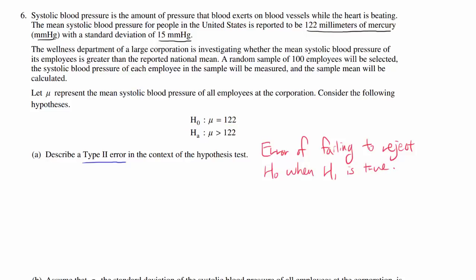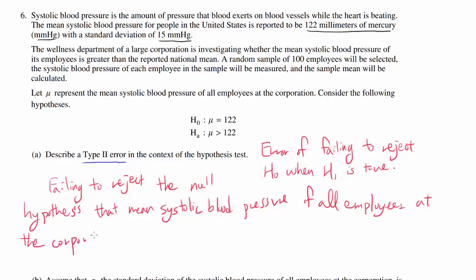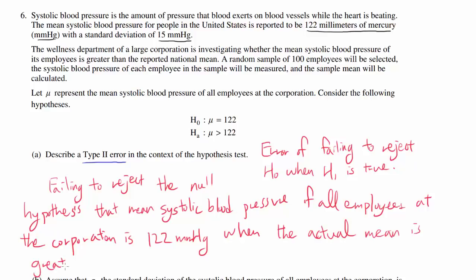So even though the alternative hypothesis is true, you're failing to reject H0. In this context, it is failing to reject the null hypothesis that the mean systolic blood pressure of all employees at the corporation is 122 millimeters of mercury, when the actual mean is greater than 122 millimeters of mercury.